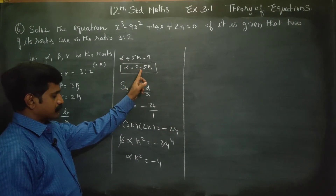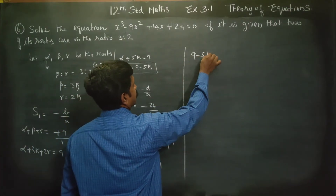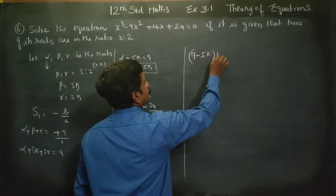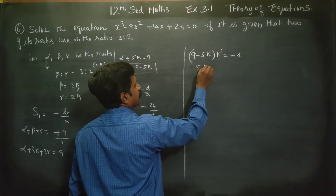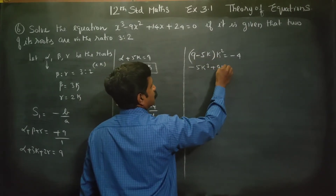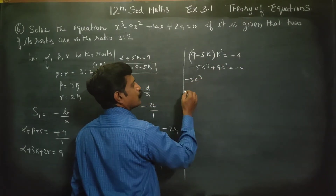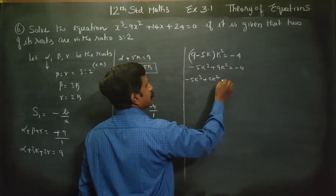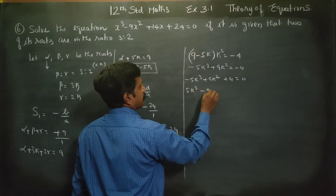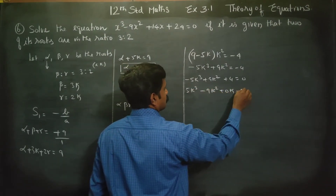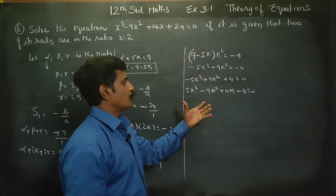Now substituting alpha equals 9 minus 5k into alpha times k square equals minus 4: we get 9 minus 5k times k square equals minus 4, which gives 9k square minus 5k cube equals minus 4, rearranging to 5k cube minus 9k square minus 4 equals 0. This is a cubic equation.